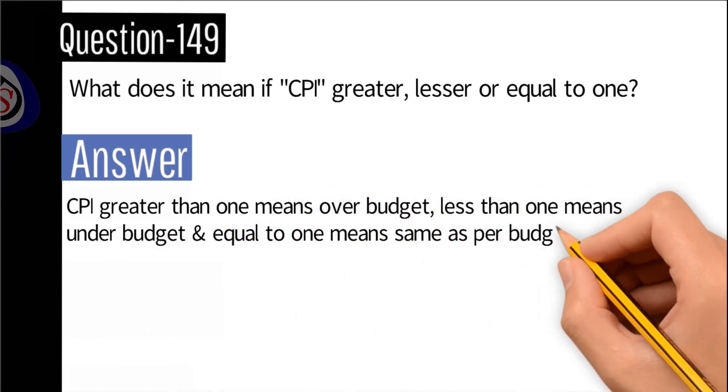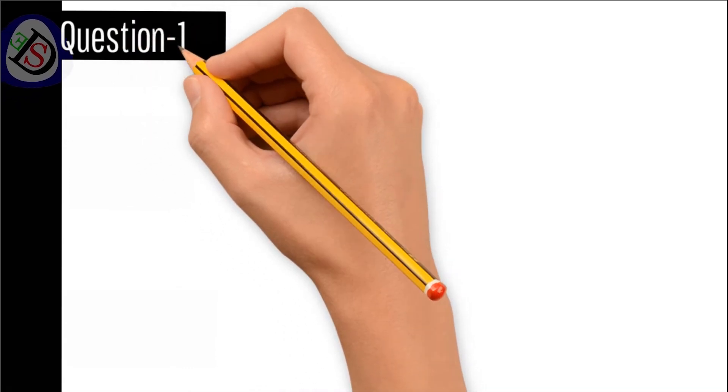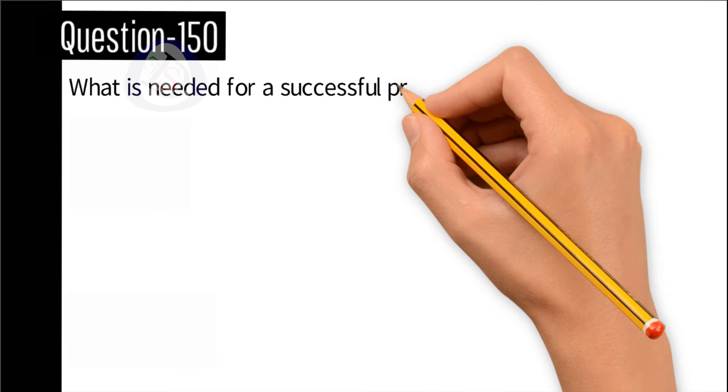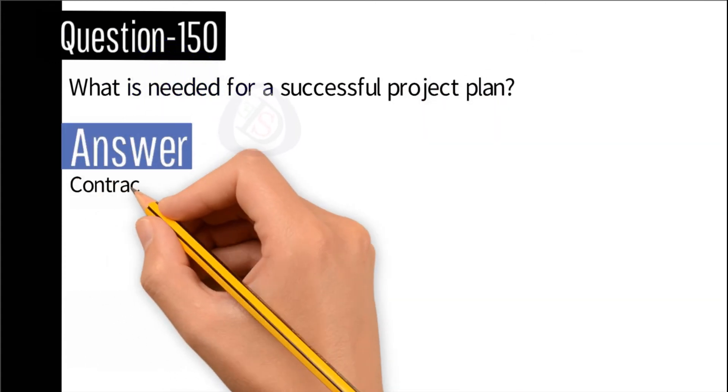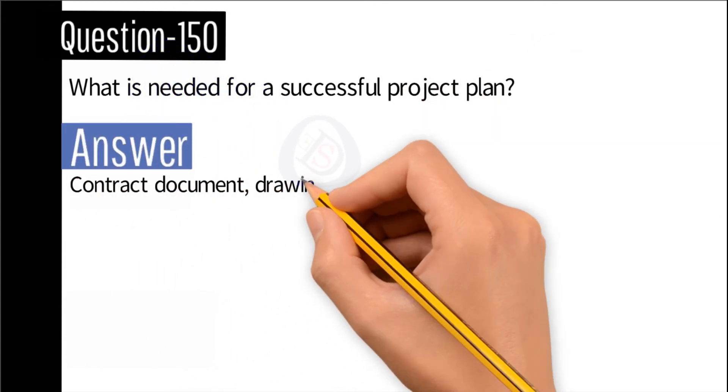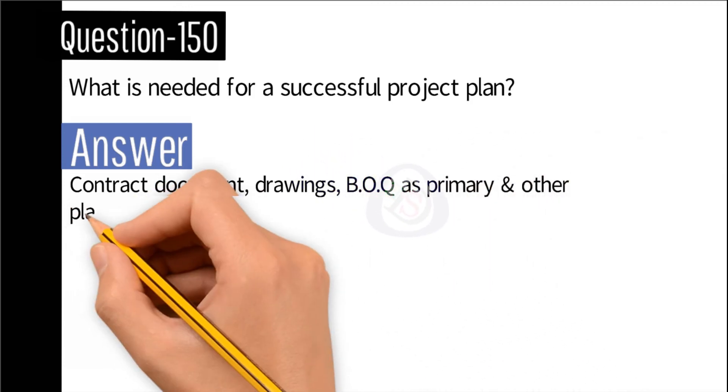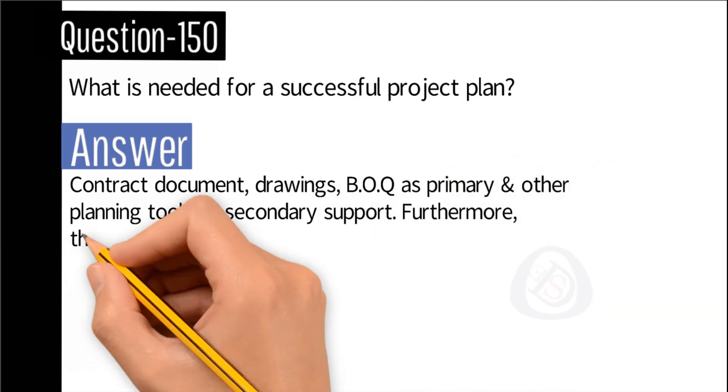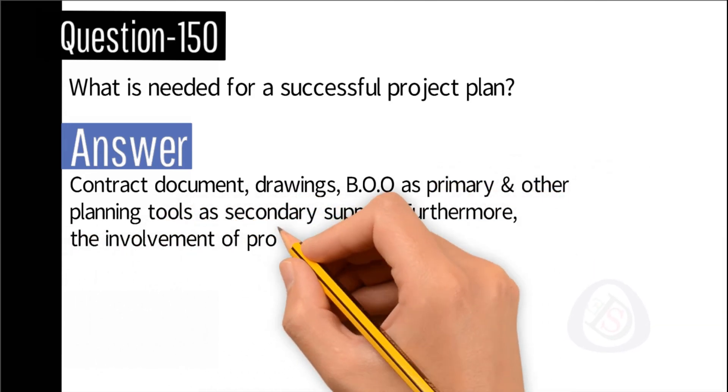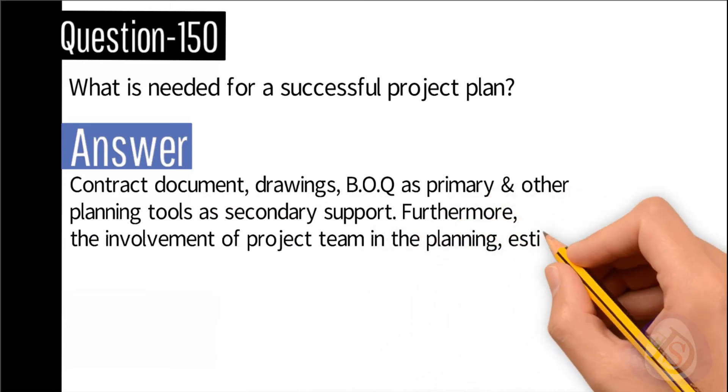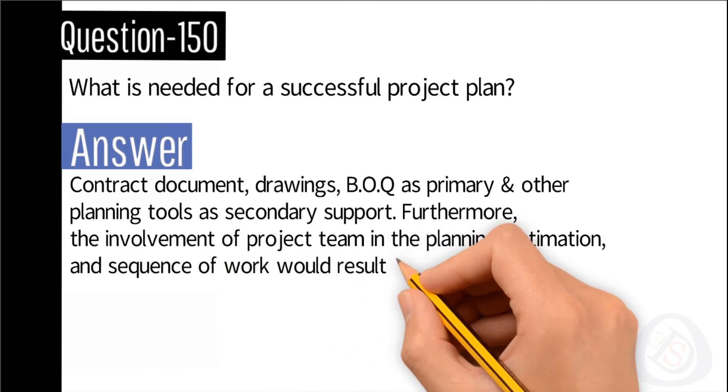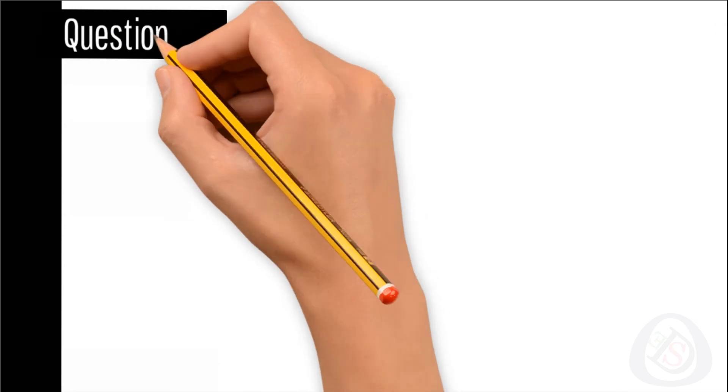Question number 150: What is needed for a successful project plan? Answer: Contract document, drawings, BOQ as primary, and other planning tools as secondary support. Furthermore, the involvement of project team in the planning, estimation, and sequence of work would result in a more accurate project plan.